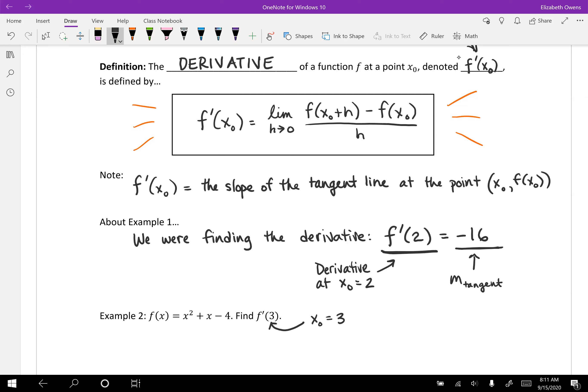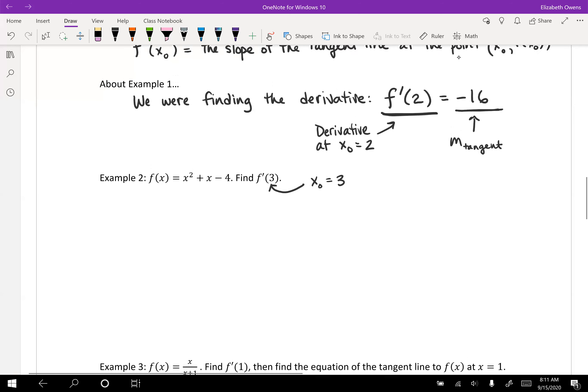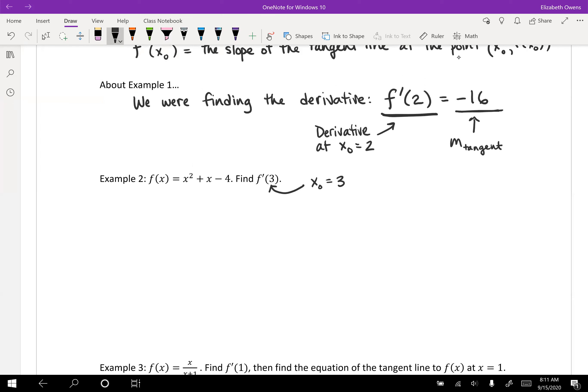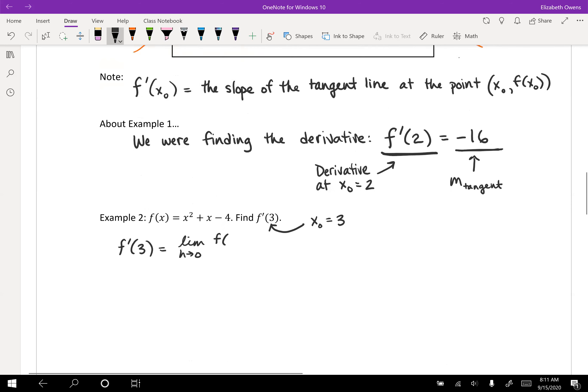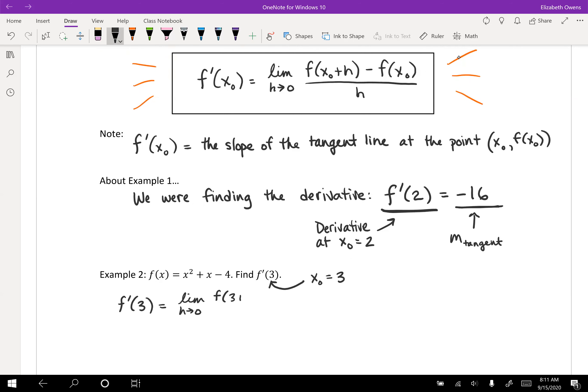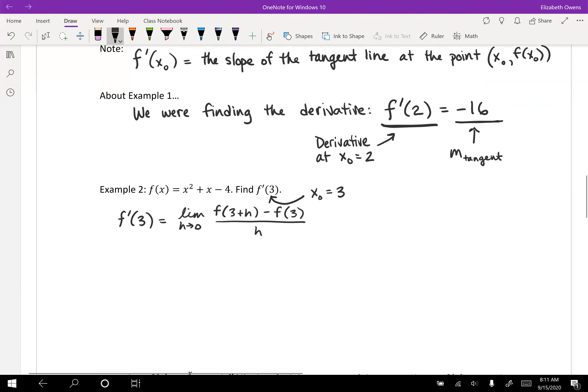And we want to compute f prime of x naught. So we are going to use our limit of the difference quotient expression. And this is just going to feel exactly like finding the slope of a tangent line. We're just going to write a different thing at the beginning.